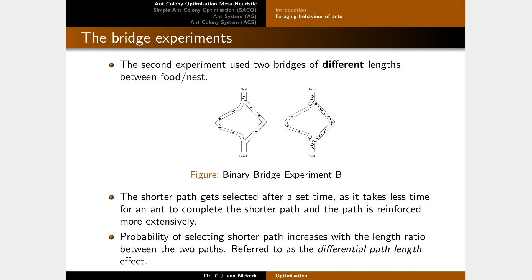The second experiment used bridges of different lengths. The shorter path gets selected over time because it takes less time for an ant to complete, so this path gets reinforced more extensively. The probability of selecting shorter paths increases with the length ratio between the two paths — this is referred to as the differential path length effect, and it is one of the key drivers behind this kind of emergent behavior.